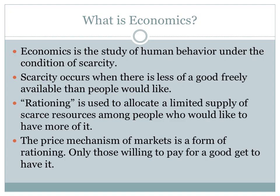So, what is economics? Economics is a study of human behavior under the condition of scarcity. Scarcity occurs when there is less of a good freely available than people would like — people have unlimited wants and desires, but only limited resources available. For example, if gasoline were priced at zero, there would not be enough to satisfy demand. Rationing is used to allocate limited supply among people who want more of it, and the price mechanism of markets is a form of rationing — only those willing to pay for the good get to have it.